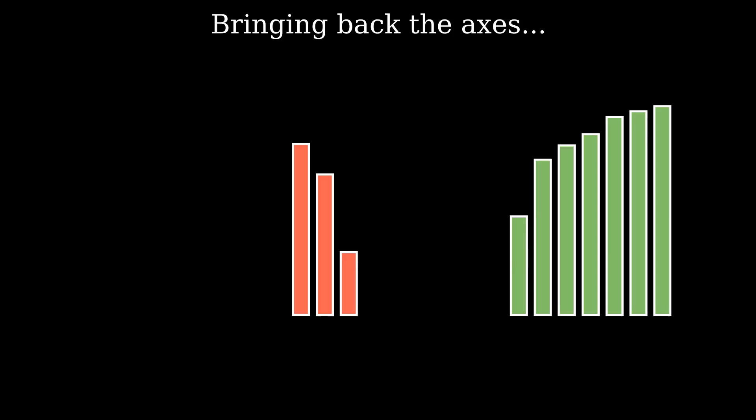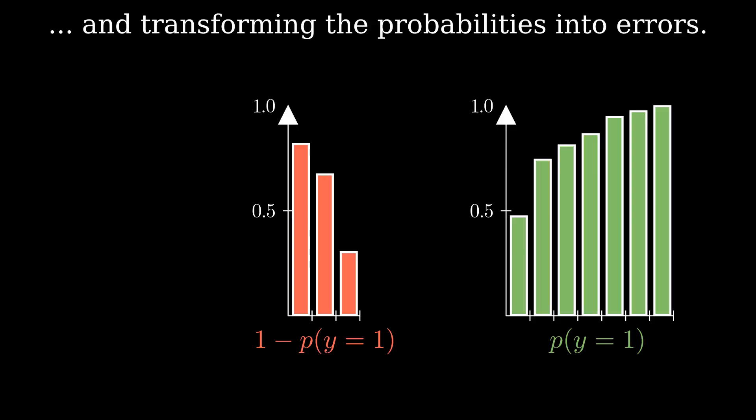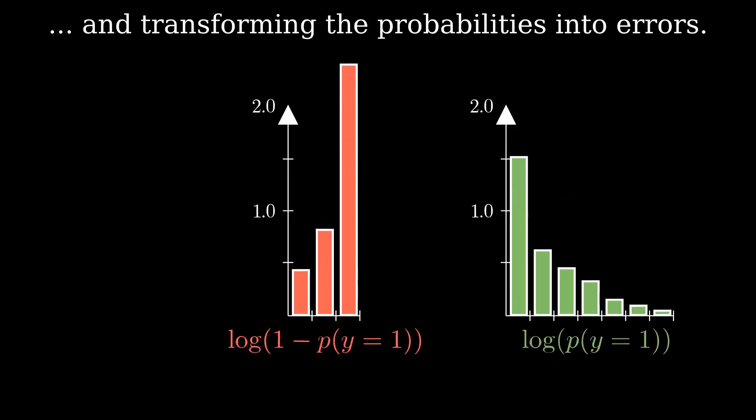Let's bring the axes back to the plots. But remember, BCE loss uses log probabilities, so we need to transform these bars. Notice that the shortest bars, those representing the lowest probabilities of a point being the color it actually is, become the tallest bars after the transformation.